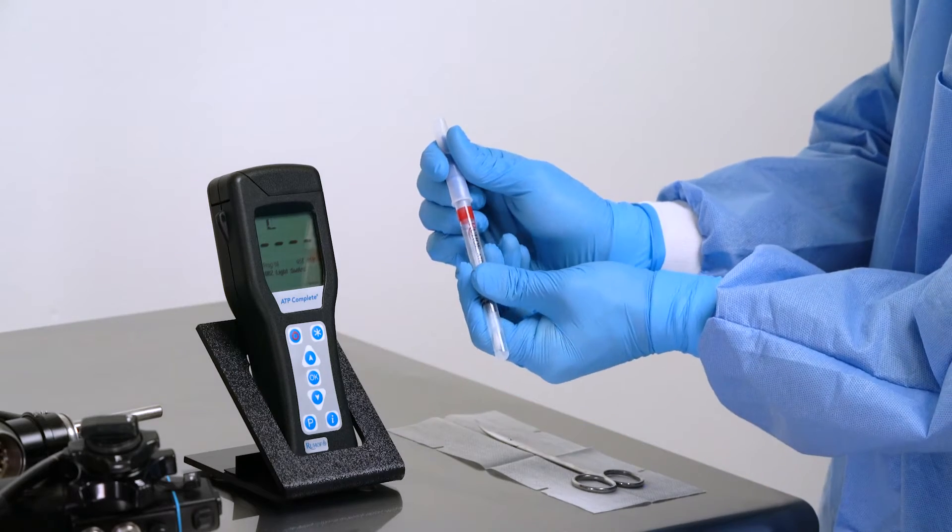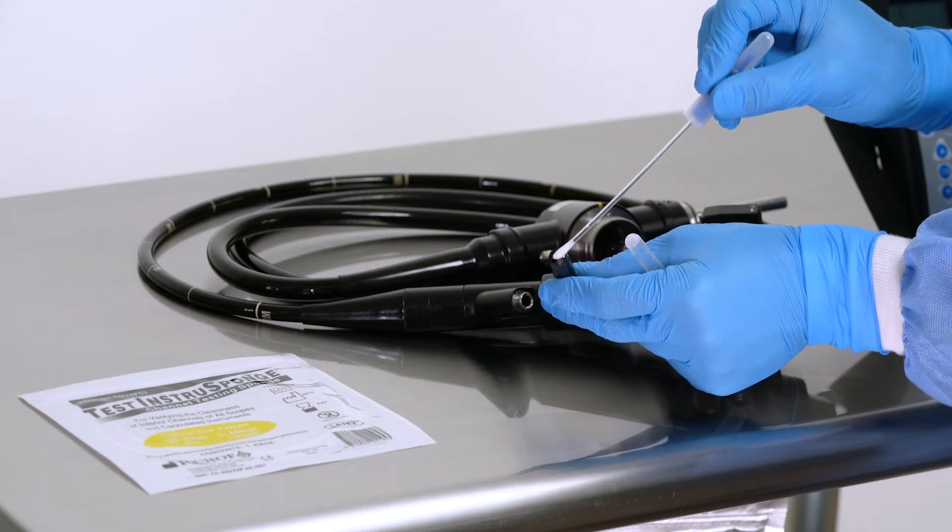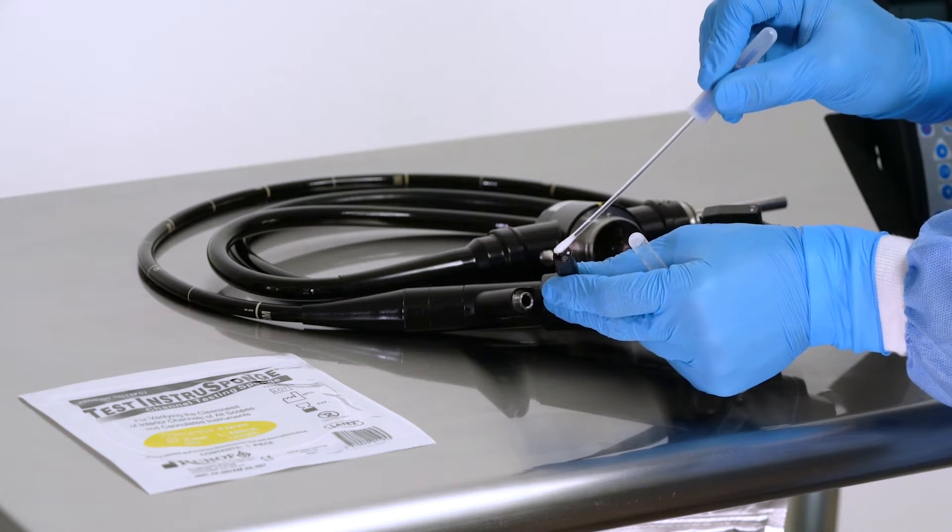Take the test swab out of the tube and swab the area of interest, such as the distal port and other critical ports of the scope.